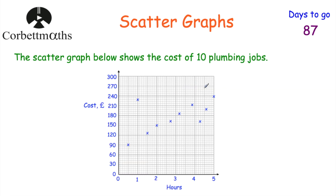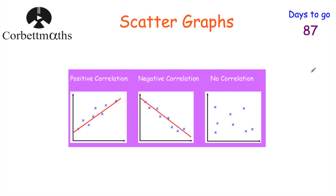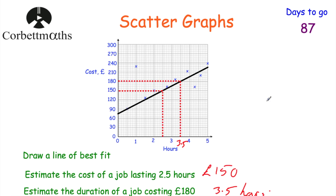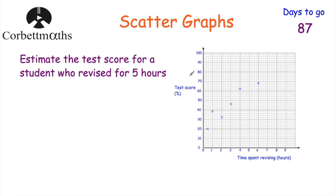So far in this video we've looked at how to plot points on scattergraphs, the types of correlation — positive, negative, no correlation — how to draw and use a line of best fit to make estimations, and outliers. Now I want to introduce a new scattergraph showing six students' revision time in hours versus their test score. For instance, one student studied for half an hour and got 20%, while another studied for six hours and got 68%.